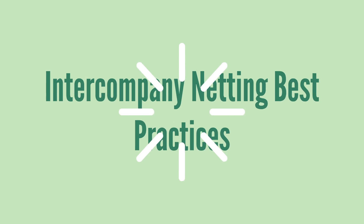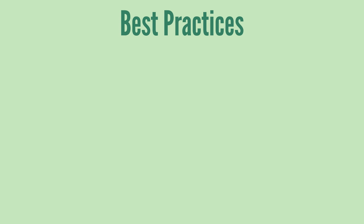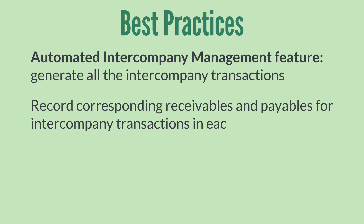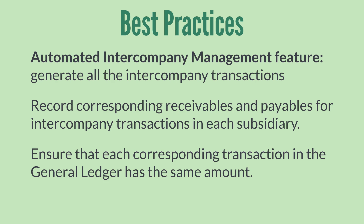There are some best practices you should follow when working with intercompany netting. For one thing, it works best when you use the automated intercompany management feature to generate all your intercompany transactions, because the intercompany transactions will be appropriately linked between the two subsidiaries. It's also important that there are corresponding receivables and payables entries for each of the subsidiaries, and each corresponding transaction must be for the same amount in the general ledger in order for netting to work.